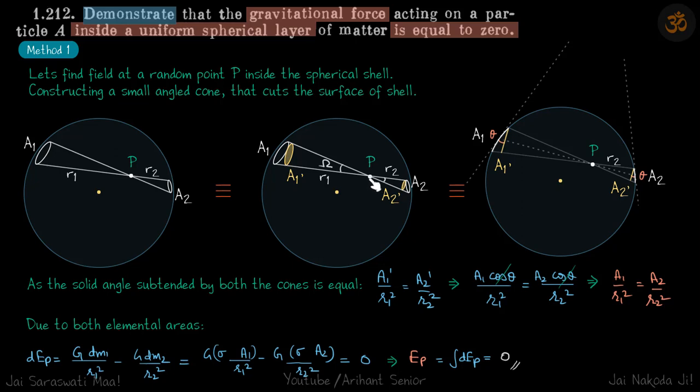Let's call it theta. Now, let's take this as the solid angle of this cone. Solid angle we know is area upon r1 square of this part, so solid angle is same on both sides. A1 dash upon r1 square equals A2 dash upon r2 square.